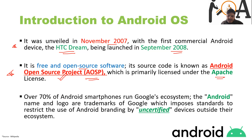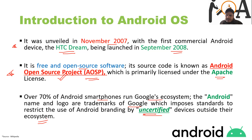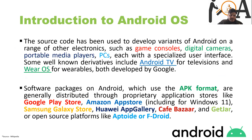Over 70% of Android smartphones run on Google's ecosystem. The Android name and logo are trademarks of Google, which imposes standards restricting the use of Android branding by uncertified devices outside their ecosystem. So basically 70% of the entire Android market ecosystem is held by Google.